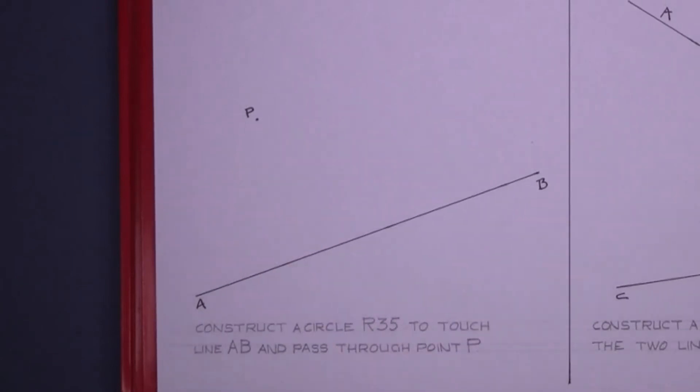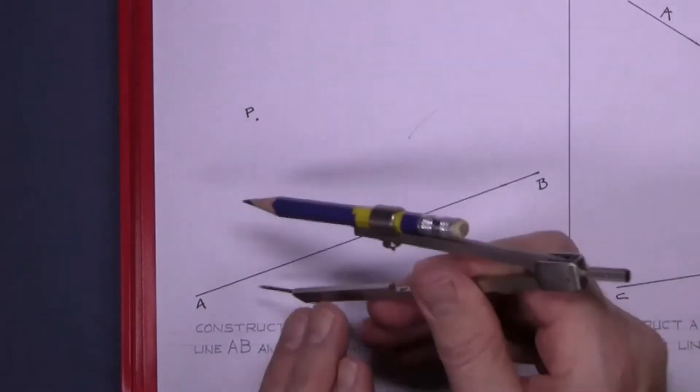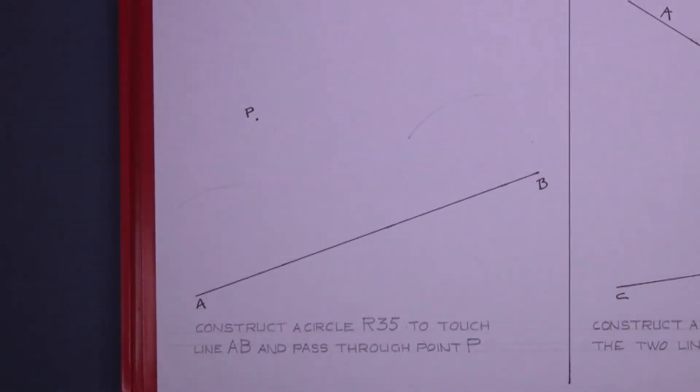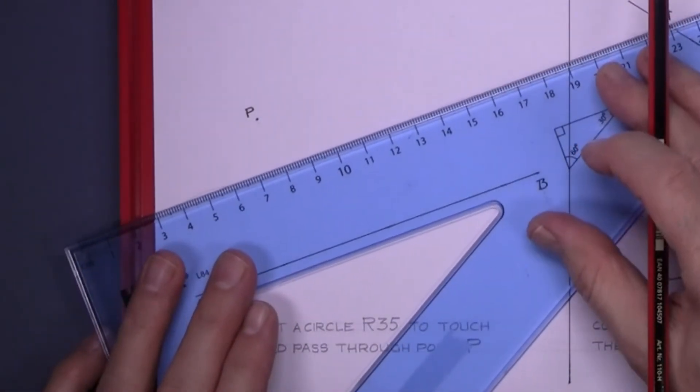So the first thing we do is set the compass to 35, put the point of the compass on the line and mark an arc, and do the same again. Now join a line touching the tops of those two arcs. That line will have gone through the center.